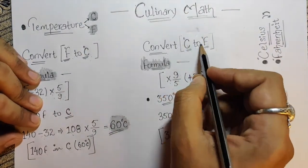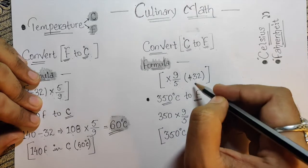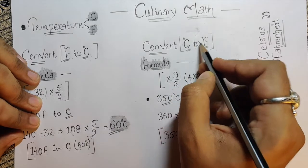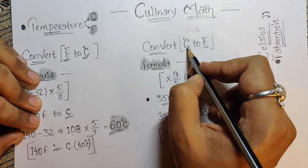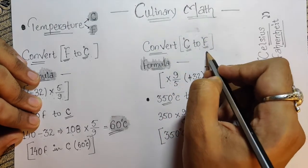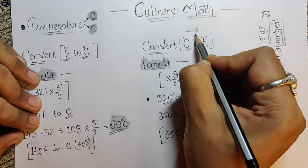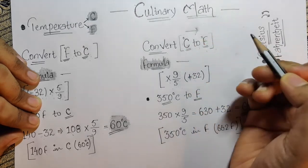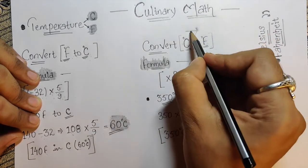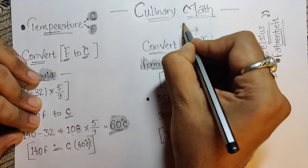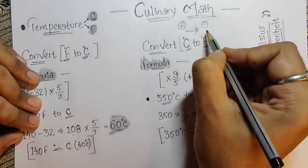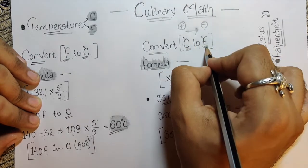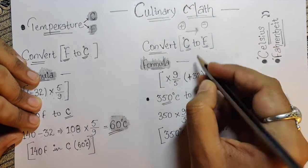Let me explain in a simple way. C to F means India to international. In India we use Celsius, internationally they use Fahrenheit. When traveling from India to abroad, we need more money. Similarly, when going from C to F, we add plus 32, like adding more money.